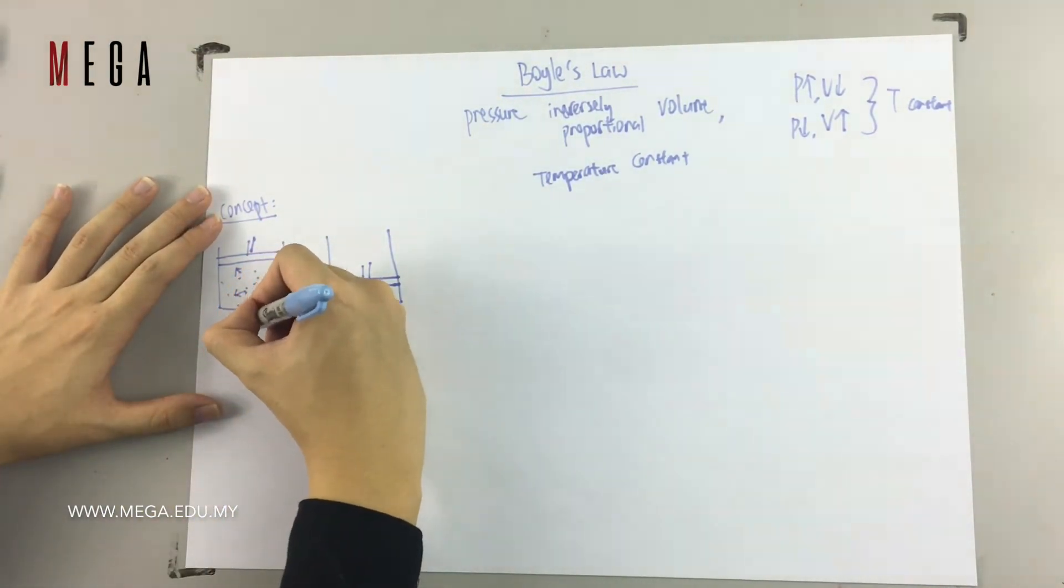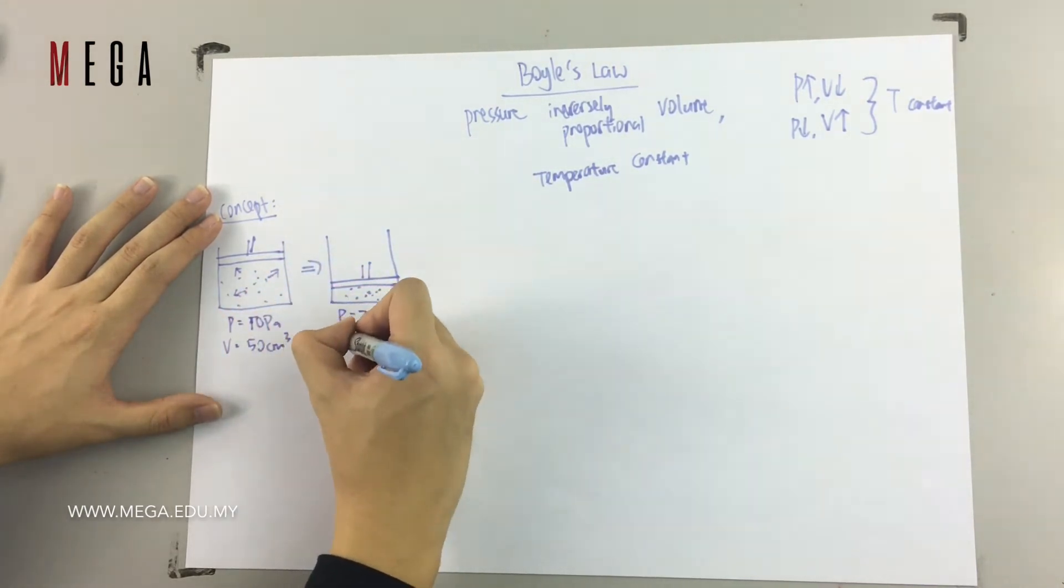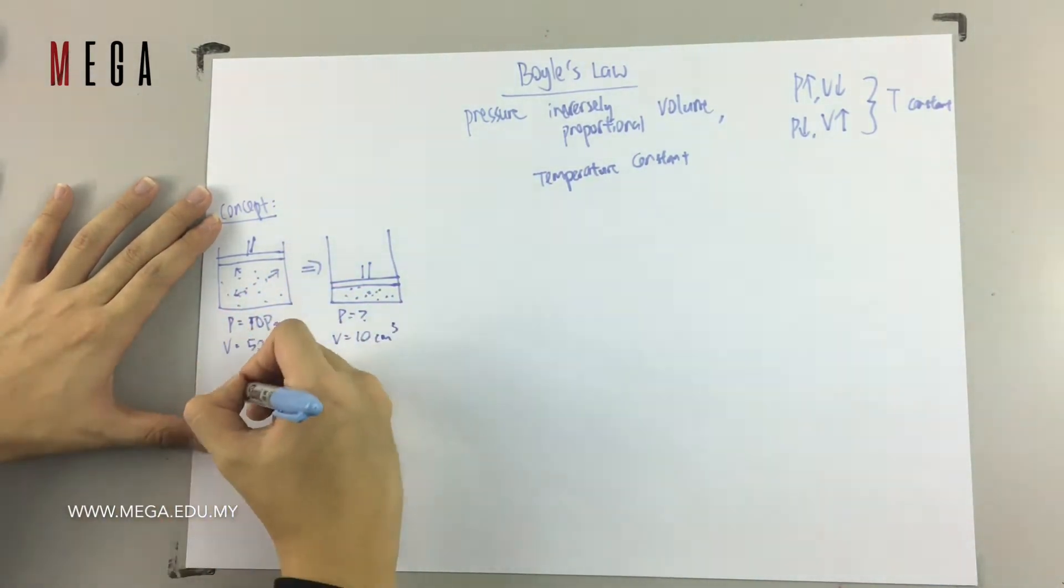Let's try an example. Before you compress, let's say the pressure is 10 Pa and the volume is 60 cm³. Then after you compress it, what is the pressure when your volume is 10 cm³?